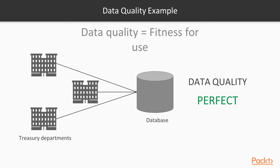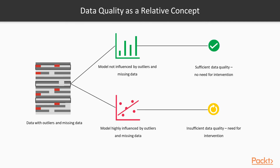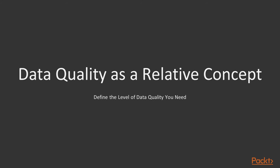It is important to get this concept since it has many relevant implications on your preparatory activities. If, for instance, you know that the model you are going to use is in no way influenced by extreme values and/or missing values, the attention you should pay to those kinds of data quality problems should be really low. And you should focus on more relevant concepts like, for instance, values outside the physiological domain of your variables. Even if data quality is not an absolute concept and you should define how much data quality you need on a case-by-case basis, this does not mean in any way that you should not take data quality seriously.